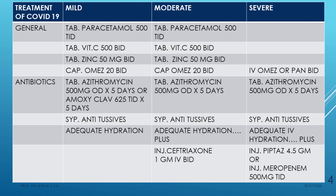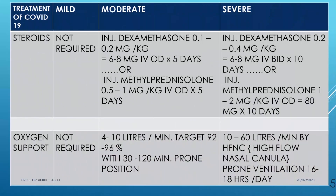Regarding steroids: no role in mild cases. In moderate cases, injection dexamethasone 0.1 to 0.2 mg/kg/day as a single dose — approximately 6 to 8 mg (2 ml) OD — should be given for five days. Alternatively, injection methylprednisolone 0.5 to 1 mg/kg/day for five days.